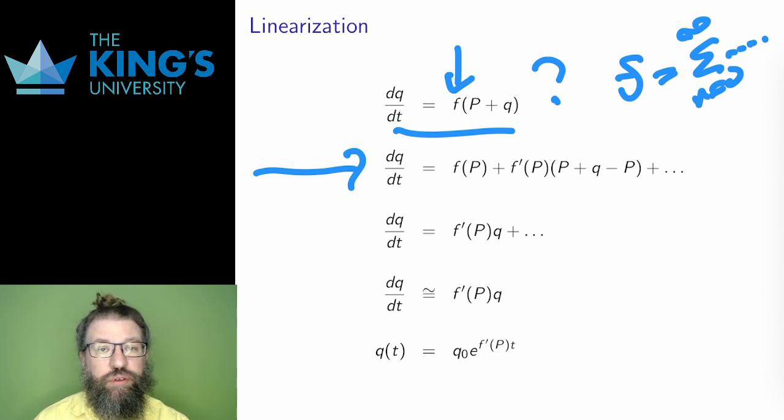So, I'm just going to write the first two terms of that Taylor series. Again, this looks really confusing at first glance. At least, it does so to me. But it's just a Taylor series. F of capital P is the constant term of that Taylor series. And the linear term has derivative f prime of capital P and the input to the function, which is capital P plus q, minus the center point capital P. And then the dots indicate the higher order terms of the series.